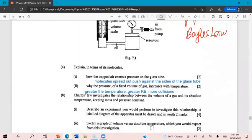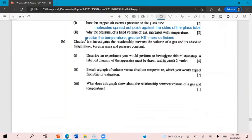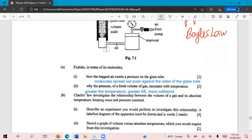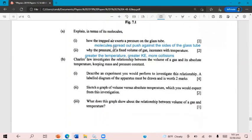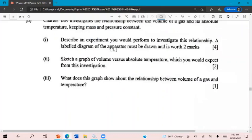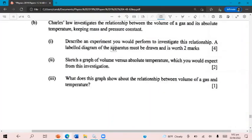Then the question goes on now, we're switching gears. Note the access now about Charles's law, not Boyle's law anymore. So forget the diagram. Part A is only dealing with that first diagram. So the diagram only corresponds to A1 and 2. Part B now is talking about Charles's law. Charles's law investigates relationship between the volume of a gas and its absolute temperature. Remember, absolute temperature just means temperature in Kelvin, keeping mass and pressure constant.